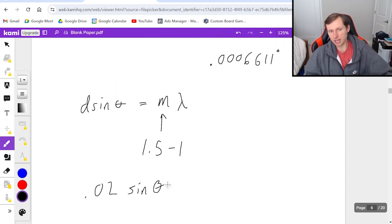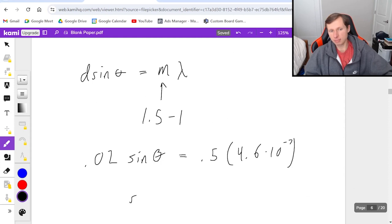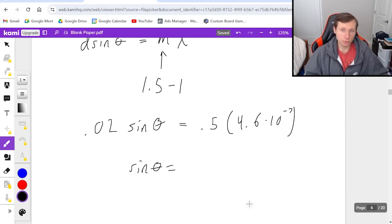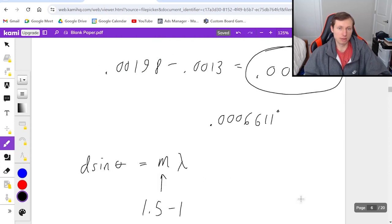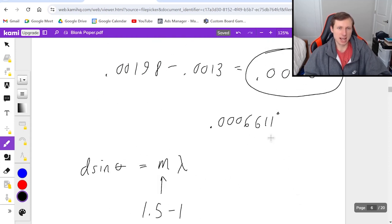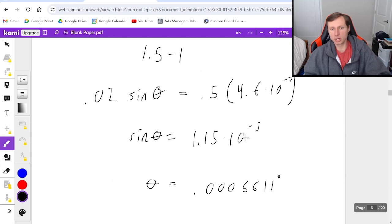If I do it this way: 0.02 sin θ = 0.5λ. Dividing by 0.02: 1.15 × 10^-5. Taking the inverse sine: 0.0006611 degrees. Comparing to the answer above, it's actually the exact same this time. But with more decimal places, you'd see it's barely off.